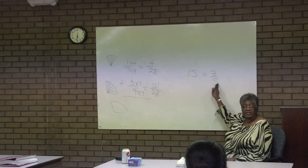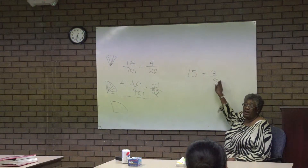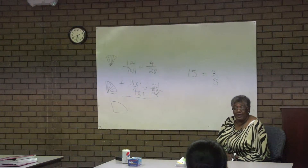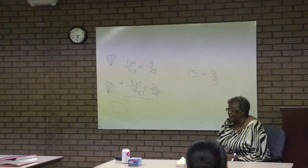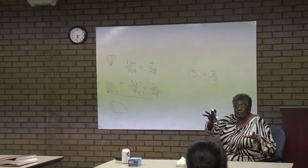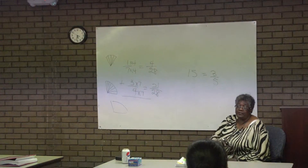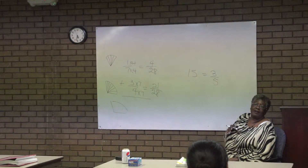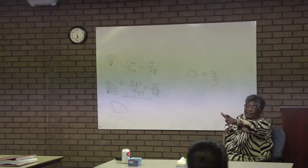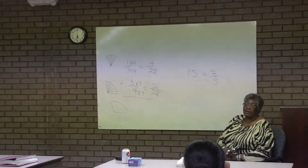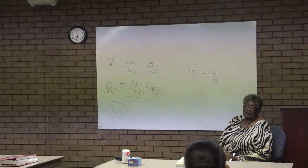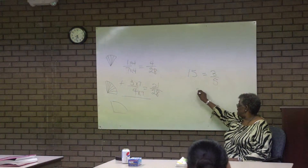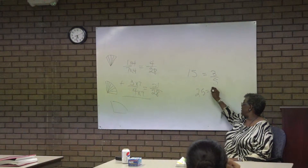15 is three of the five. What is 15 three of? 15 is three fives — that's the only thing you can put three of with 15 is five. If 15 is three of the five, how many is five of the five? 25. If 15 is three of the five, 25 has to be the whole thing.